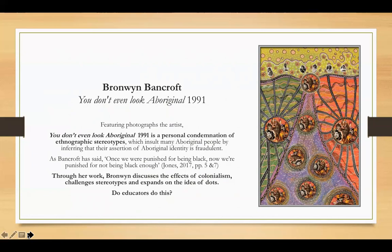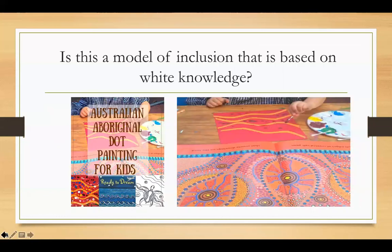What I would understand is that this activity doesn't actually do dot painting in the deeper sense. What does it mean when we use Bronwyn Bancroft in experiences like this in early childhood?